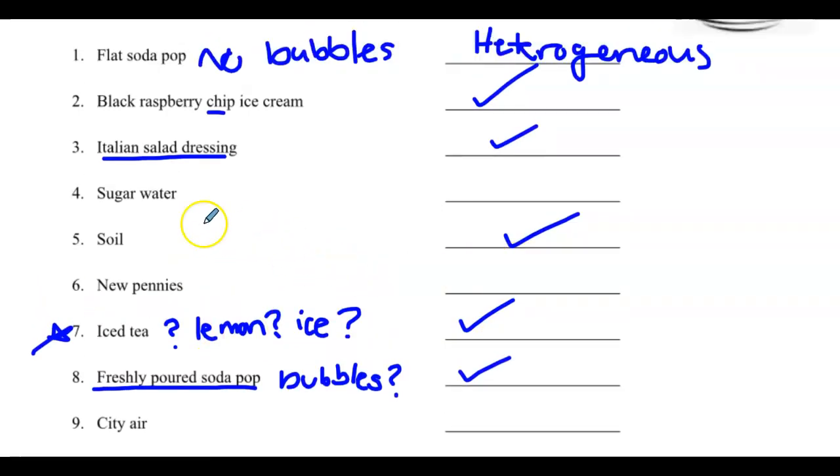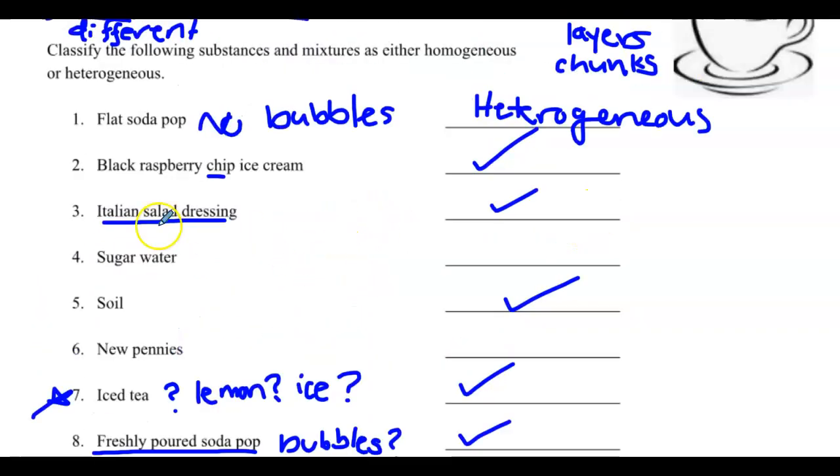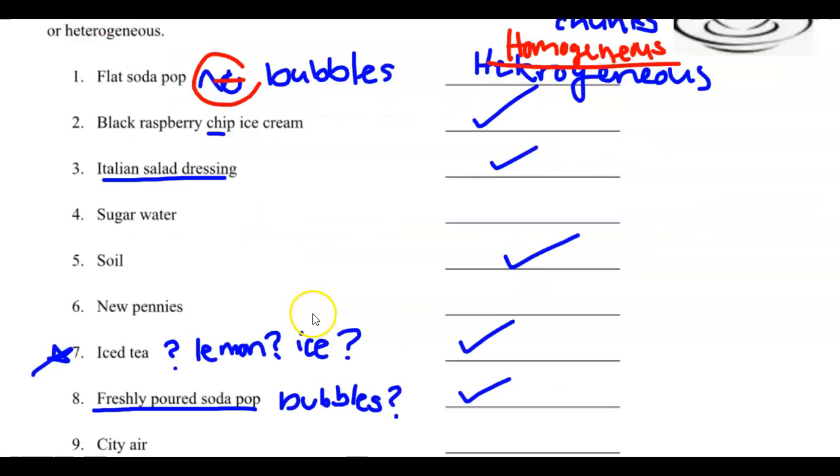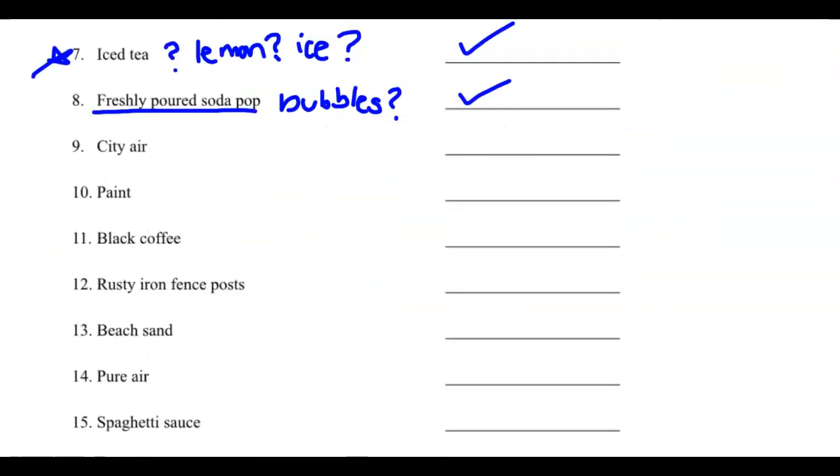Oh, look. I made a mistake. Let's go back. So freshly poured soda pop. It has bubbles. It is heterogeneous. Iced tea with lemon and ice. It's heterogeneous. Soil with chunks. It's heterogeneous. Italian salad dressing. It's heterogeneous. Black raspberry chip ice cream. It's heterogeneous. What the heck was I doing on the first one? There is no bubbles. So this is our example where it's homogeneous.